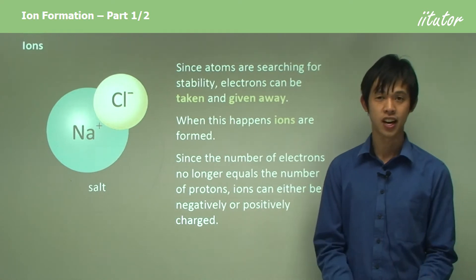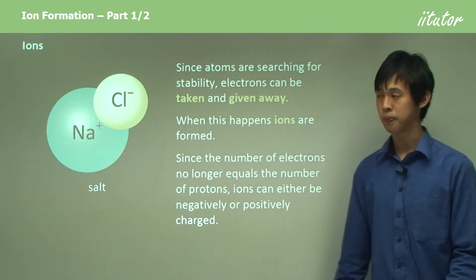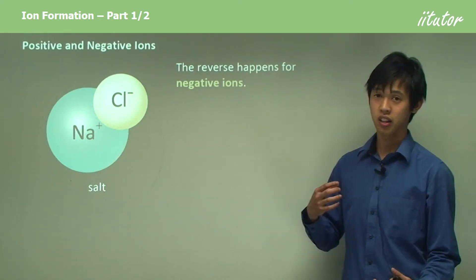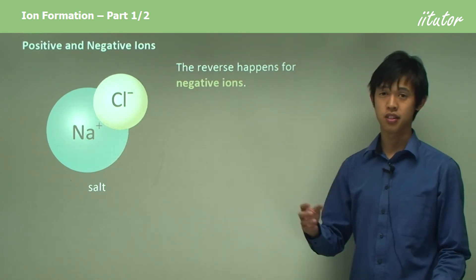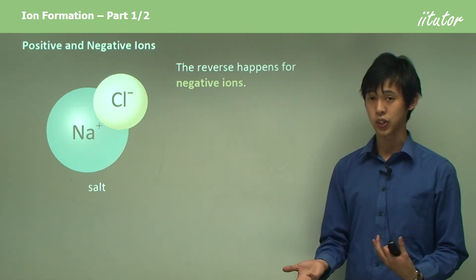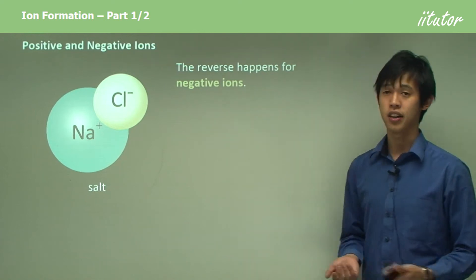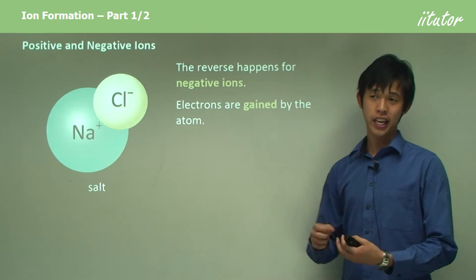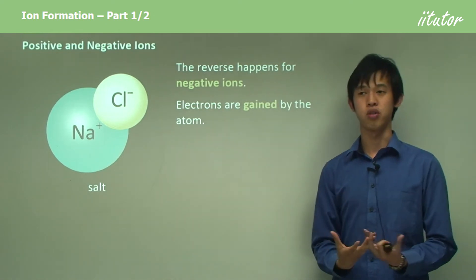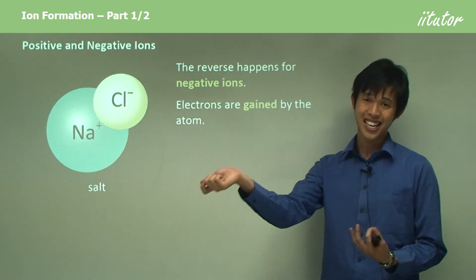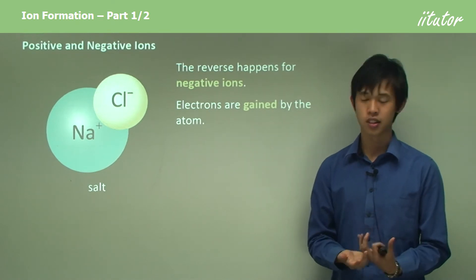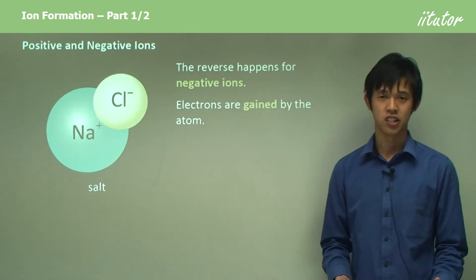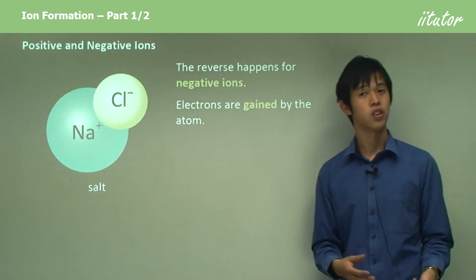So positive and negative ions - when we are talking about negative ions, the reverse happens. Electrons are gained by the atom. Before we gave away an electron and we had an excess of protons, but now we're taking in an electron and we're getting an excess of electrons. So there's more electrons than protons, you get a net negative charge.